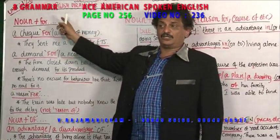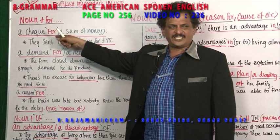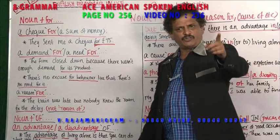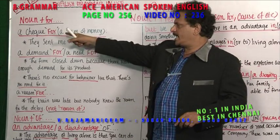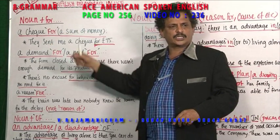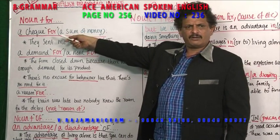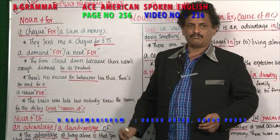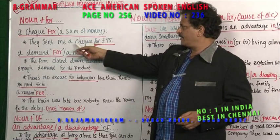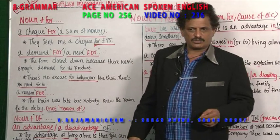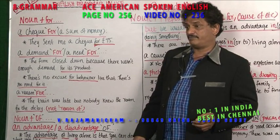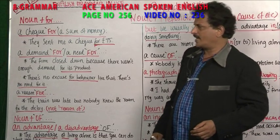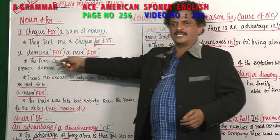A check for — earlier you have seen 'by check': I pay my fees by check. Here, after the noun 'check', the preposition comes after it: check for. A check for a sum of money — what do you mean? It's a total amount of money. I wrote a check for buying a car. They sent me a check for 75 pounds. So check for means a total amount of money — a check for 10,000, a check for 20,000, a check for 1 lakh. A demand for — demand is a noun.